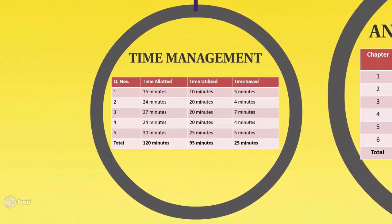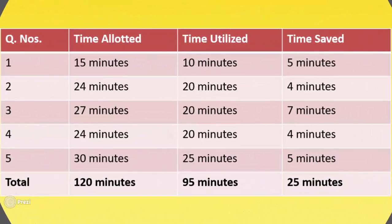Finally, we go to time management for the geometry paper. Marks for the geometry paper are 40 and time duration is 2 hours, so we have 120 minutes in hand. One mark is equal to 3 minutes. Question number 1: time allotted is 15 minutes, we will utilize 10 minutes, saving 5 minutes. Question number 2: time allotted is 24 minutes, utilized time would be 20 minutes, saving 4 minutes.